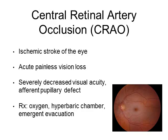Central retinal artery occlusion is essentially an ischemic stroke of the eye. It can be associated with temporal arteritis in older patients, and you may elicit a history of amaurosis fugax — transient vision loss within two hours of the occlusion. The patient will complain of acute painless vision loss or partial vision loss, with severely decreased visual acuity and an afferent pupillary defect: light shone in the unaffected pupil causes both pupils to constrict, but light shone in the affected pupil causes both to dilate. Treatment is oxygen, hyperbaric chamber if available, and emergent evacuation.